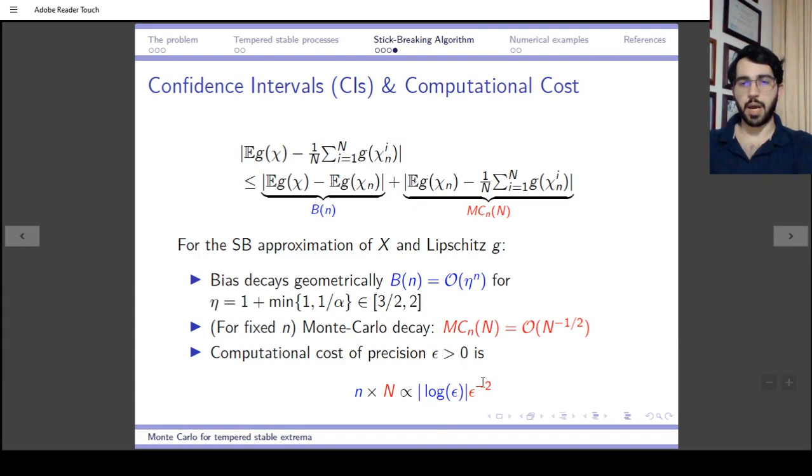Comparable methods in the literature usually get a power function here, ε^{-p}, where p is strictly larger than 2, typically between 3 and 4.